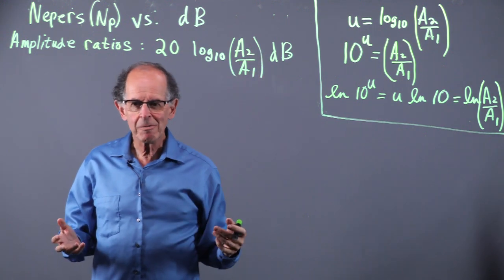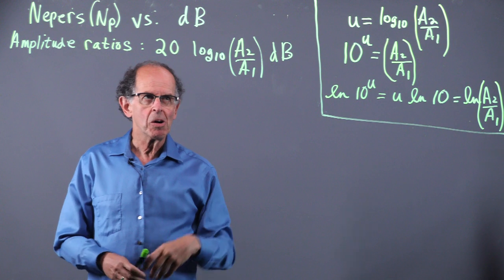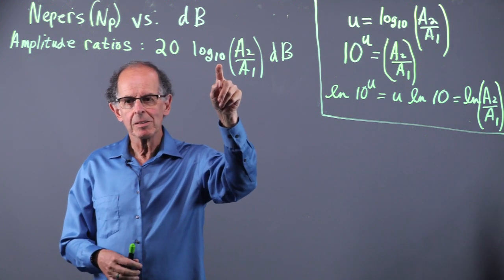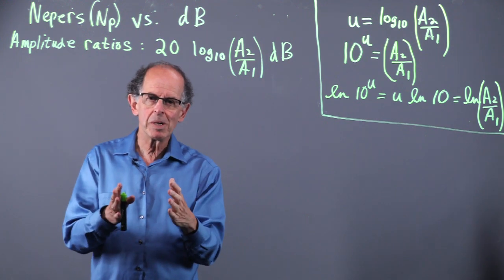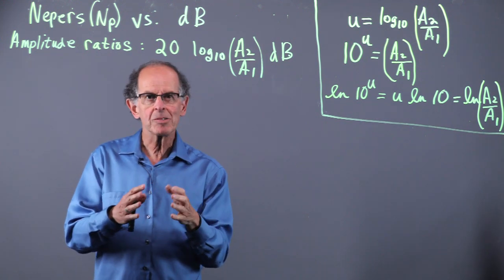Whereas if we take the log, 10 million is 7. So we've scaled things down. We've compressed the range so we can analyze it better.